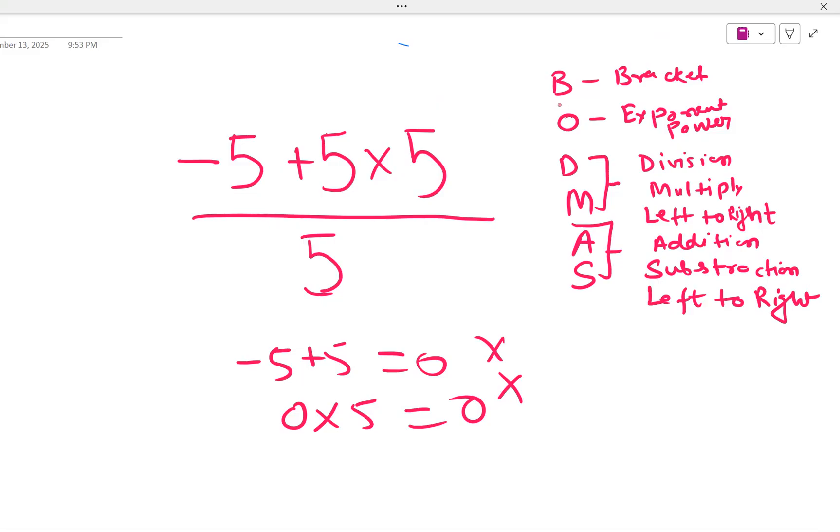So first, we will remove the bracket. Any bracket, if it is there, we will do all the operations of the bracket. And then we will do the exponent power operations. Then division and multiplication have the same priority. And they can be done one at a time, left to right.